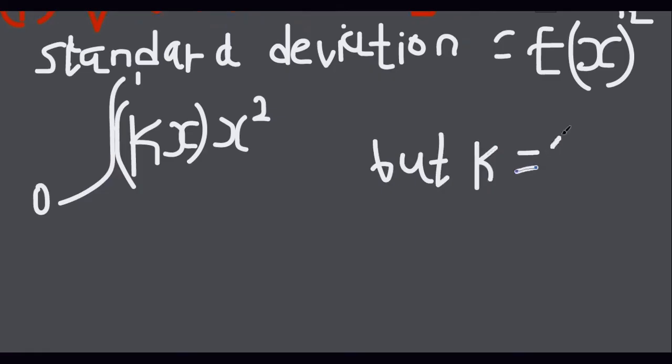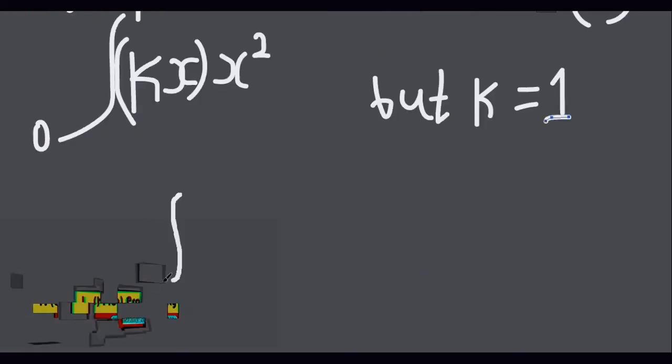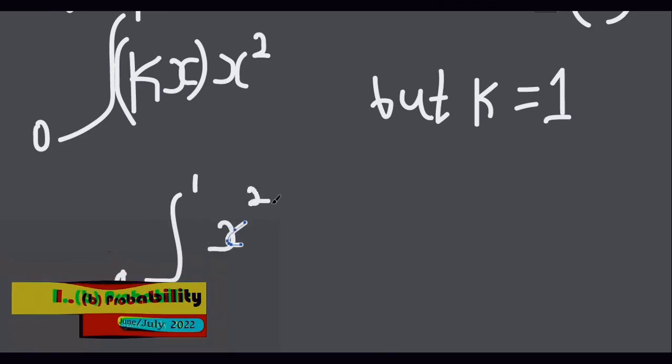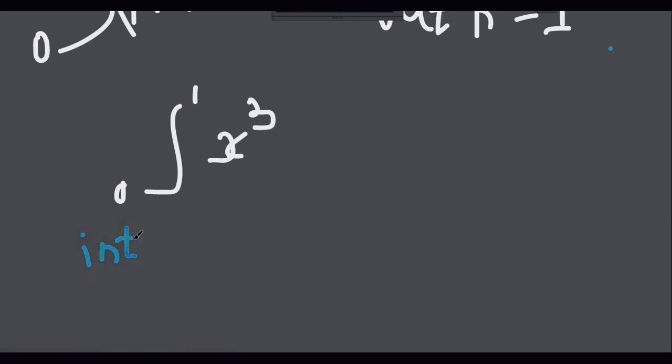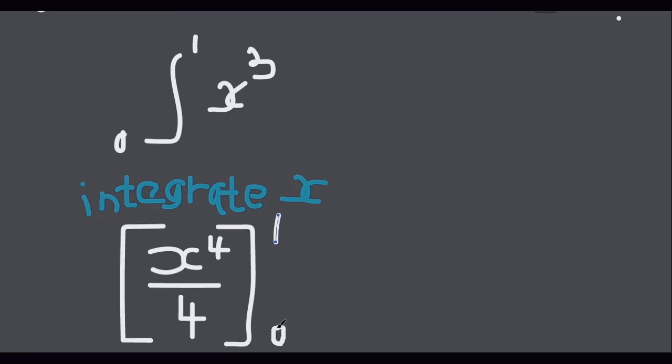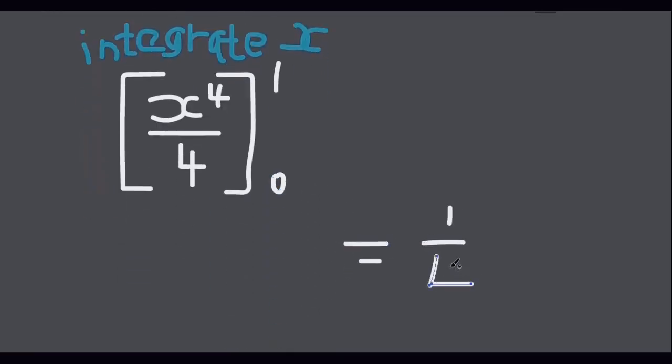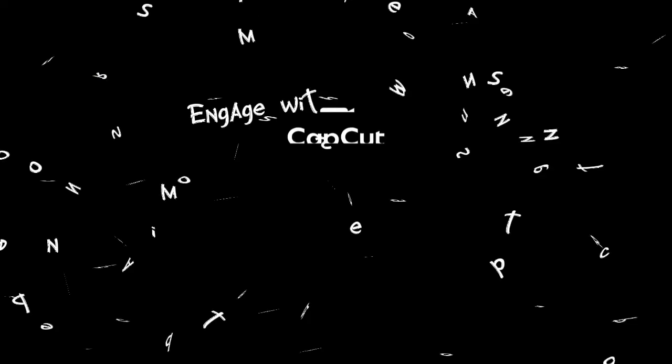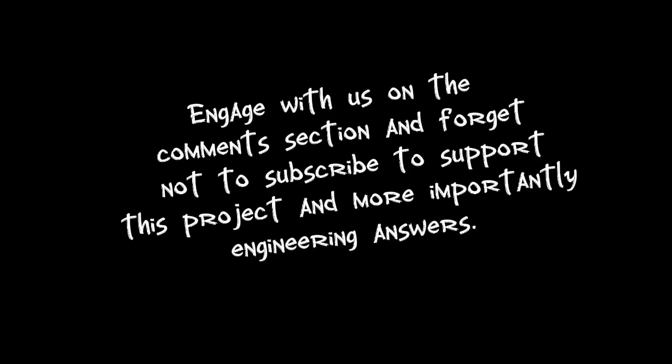But k equals to 2, not 1. So we will also integrate it. So it will be x cubed. That's our next answer. So it will be x squared over 2.